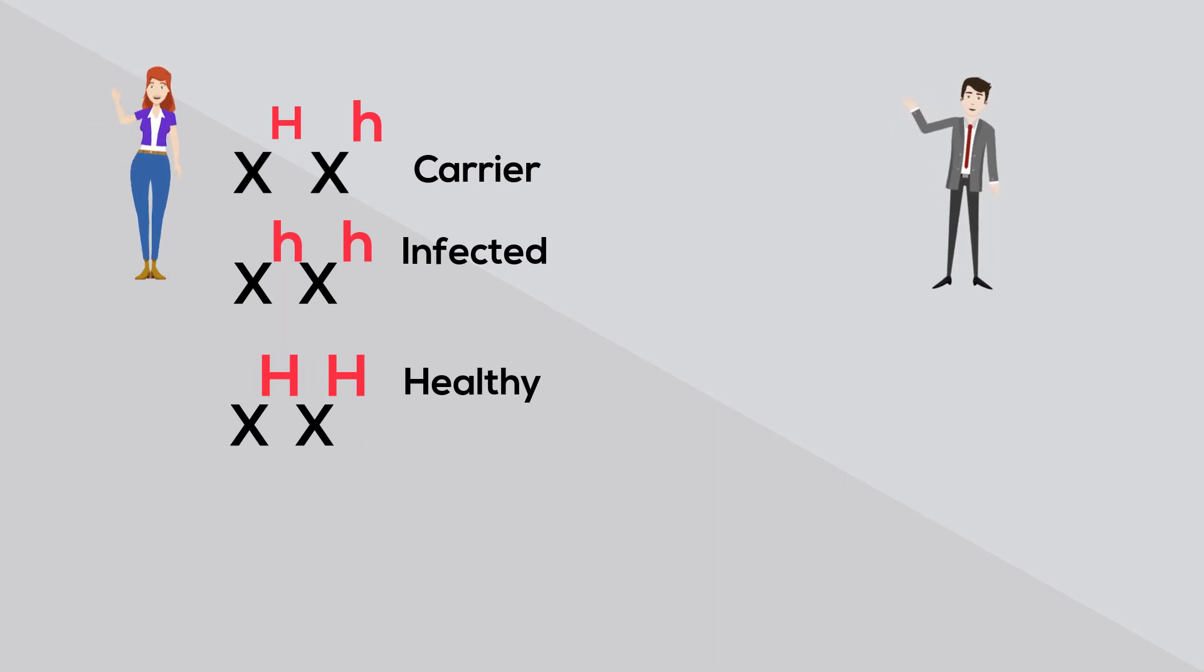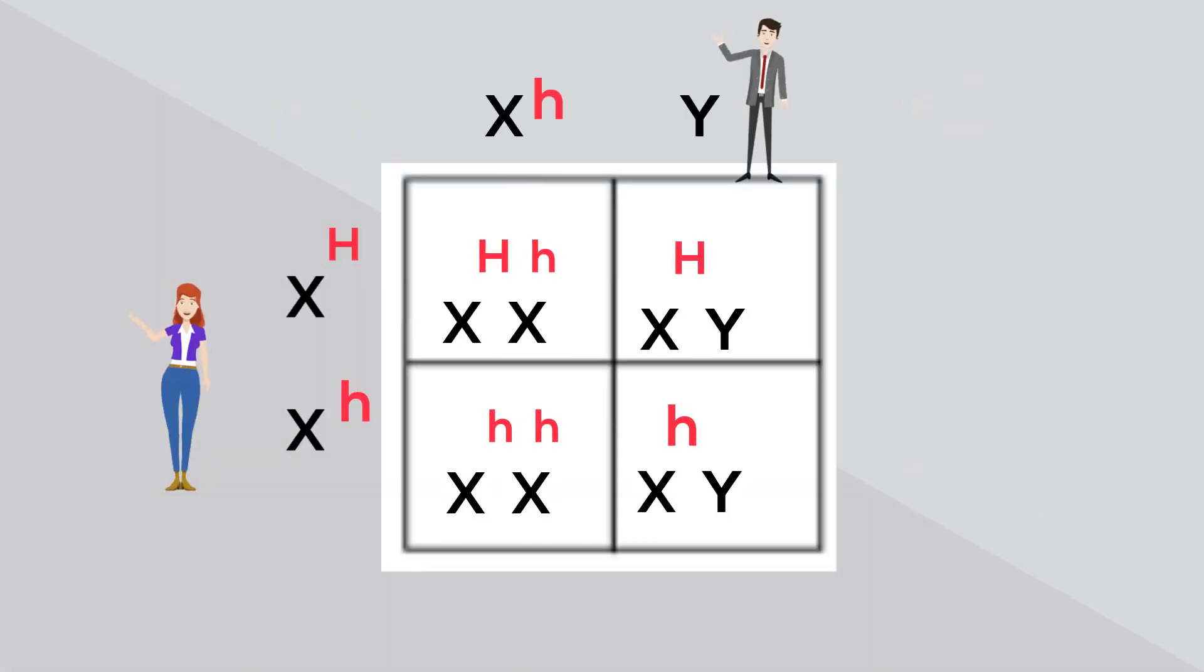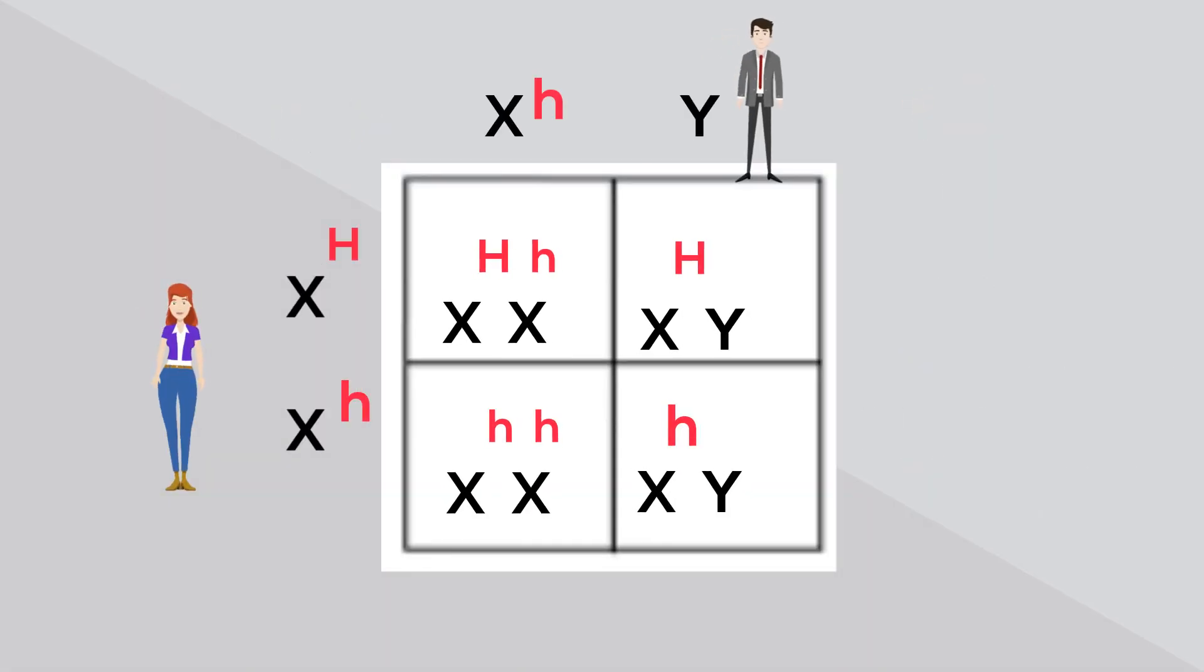Males will only have the disease or not. Let's go back to the Punnett square and look at their offspring. This female is a carrier. This female has the disease. This male has not inherited hemophilia and this male has.